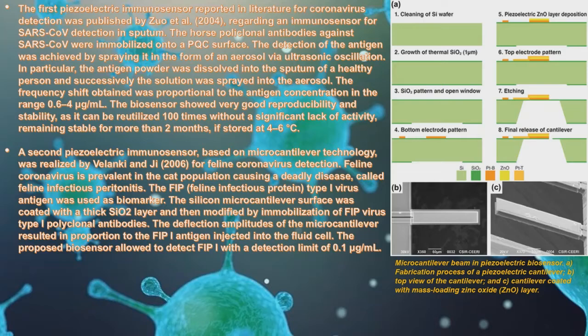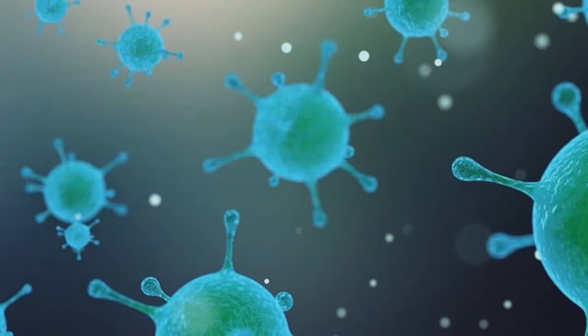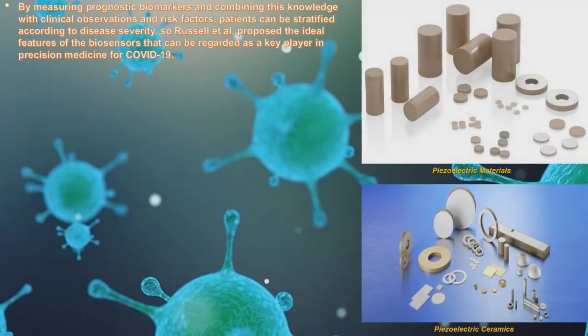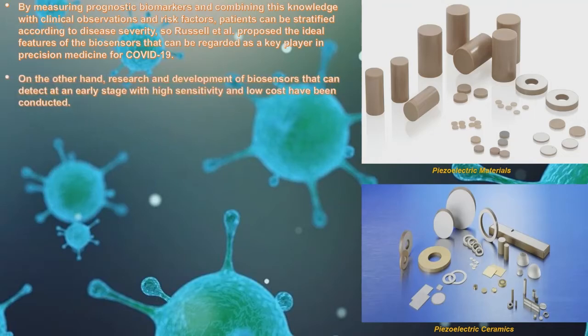The deflection amplitude of the microcantilever was proportional to the FIP1 antigen injected into the fluid cell. The proposed biosensor allowed detection of FIP1 with a detection limit of 0.1 microgram per milliliter. By measuring prognostic biomarkers and combining this with clinical observations and risk factors, patients can be stratified according to disease severity. Russell and others proposed ideal features for biosensors that can be regarded as key players in precision medicine for COVID-19.